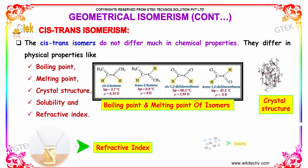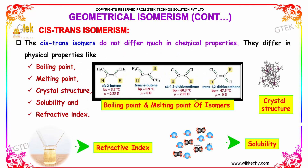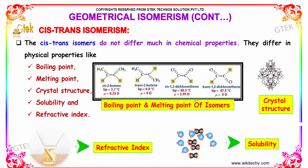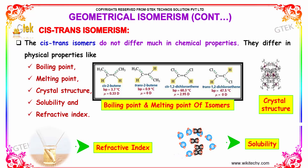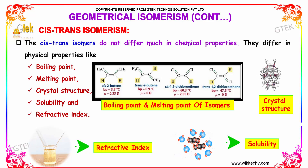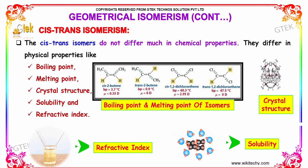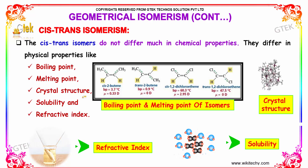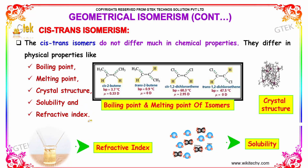The cis-trans isomers do not differ in chemical properties. They only differ in physical properties such as boiling point, melting point, crystal structure, solubility, and refractive indices.